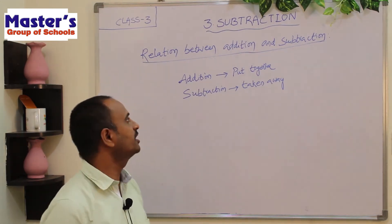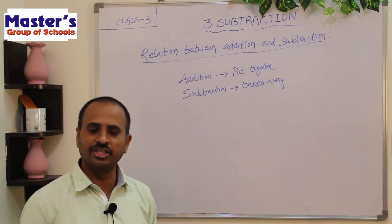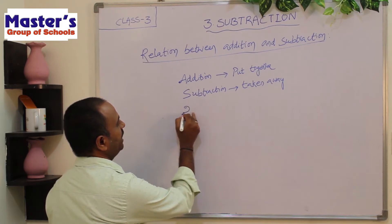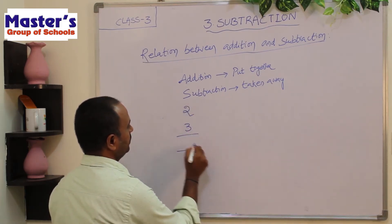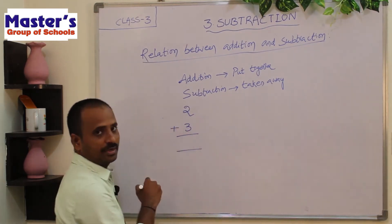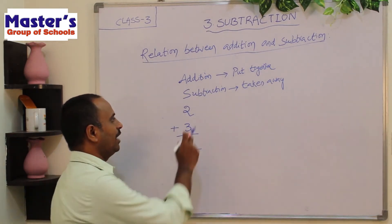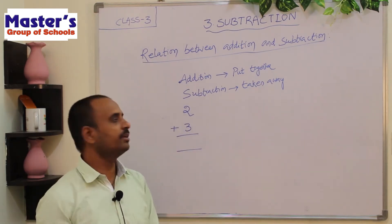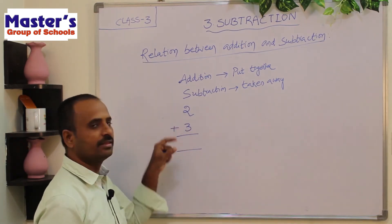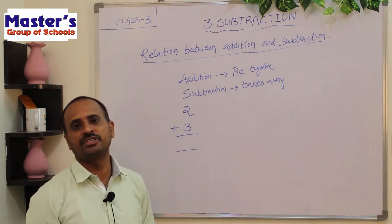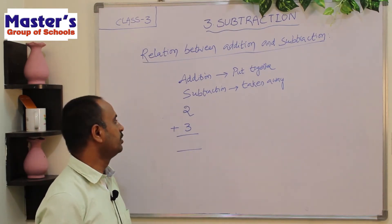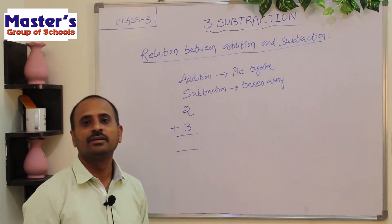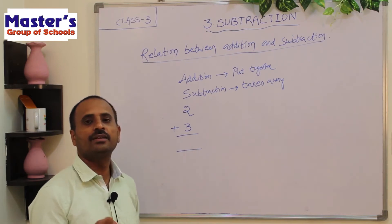Now let us see an example to understand the relation between addition and subtraction. What is the addition of 2 and 3? We will add 2 and 3. Addition means combining — put 2 and 3 together. Open 3 fingers, start counting after 2: 3, 4, 5. So if you add 3 to 2, we will get 5.